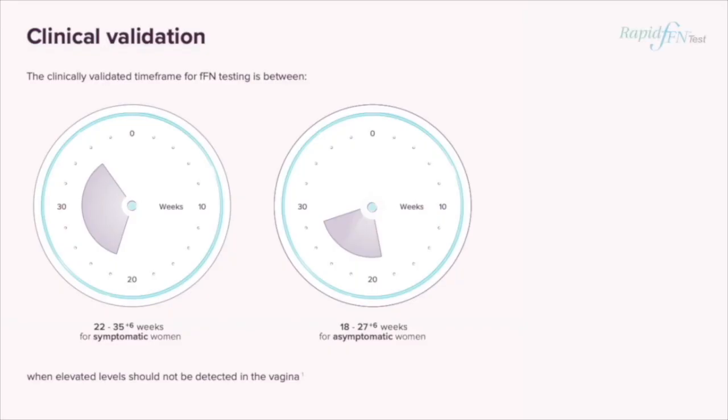Fetal fibronectin is valid for use within two groups of patients: between 22 and 35 plus six weeks for symptomatic women, and between 18 and 27 plus six weeks for asymptomatic women with risk factors for preterm birth.